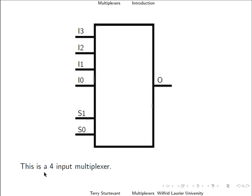This is a four input multiplexer. These are the inputs labeled I0 to I3. These are the select inputs, S0 and S1. Since there are two bits of select input, that can select a binary number from 0 to 3, indicating these four inputs. And this is the output.